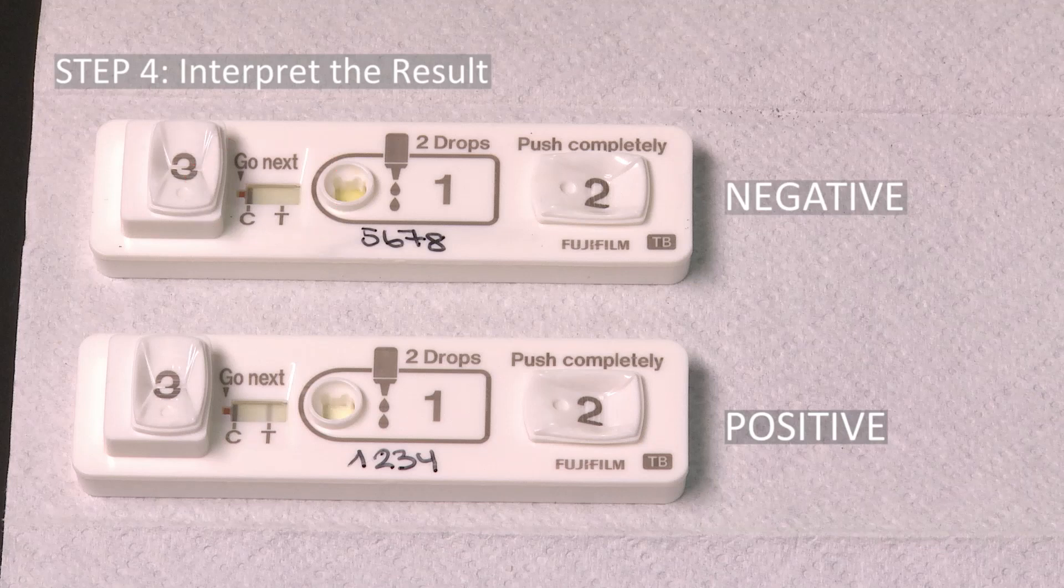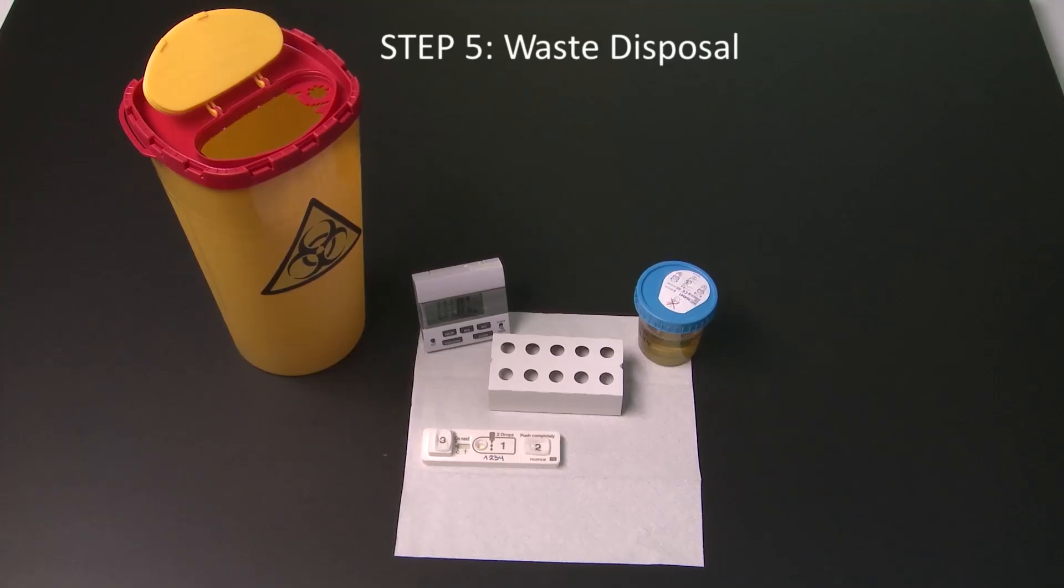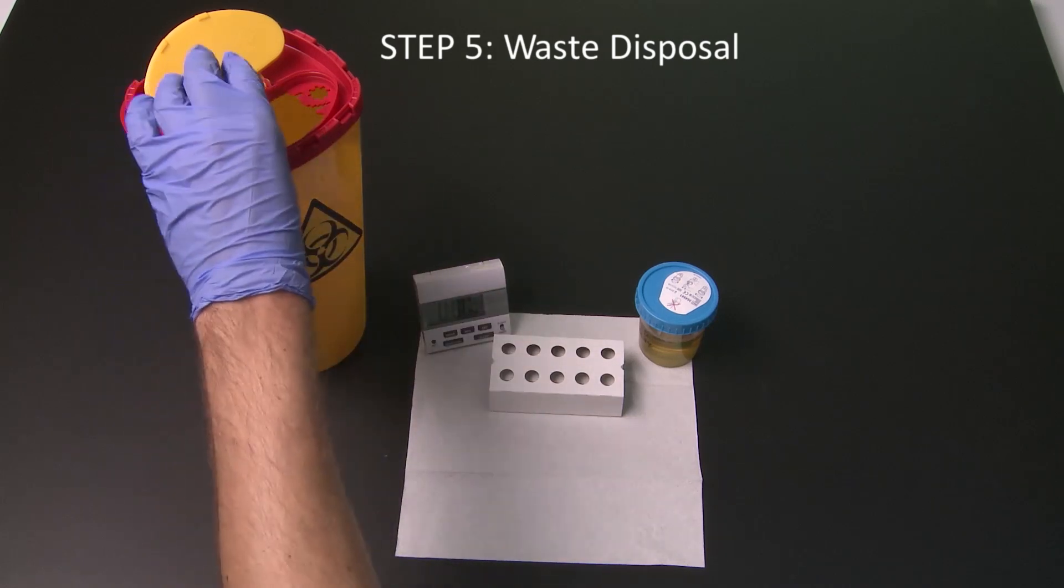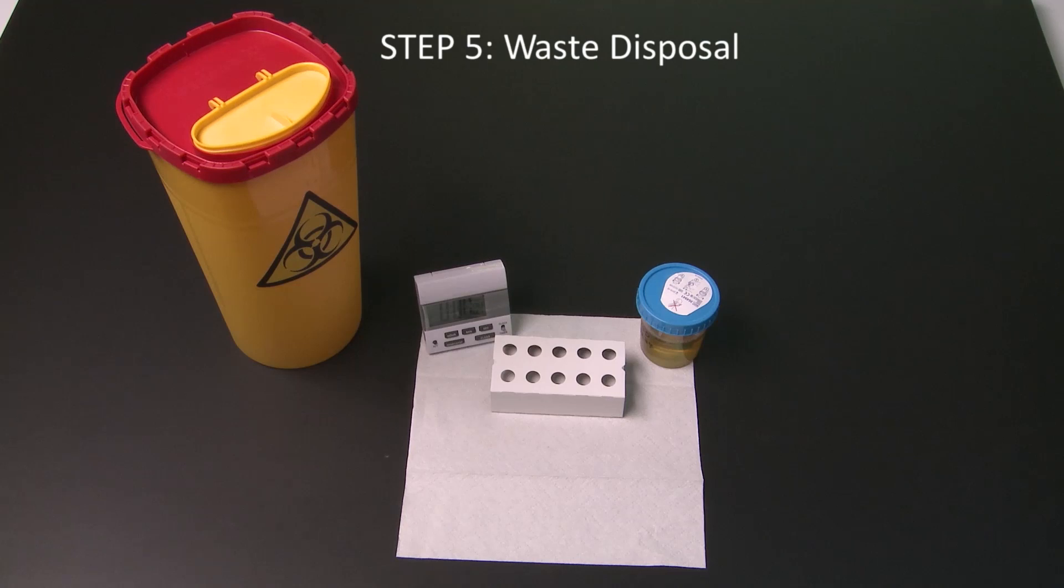If there is no control line, the result is invalid and the test must be repeated. Treat used devices and assay materials as potentially biohazardous waste and dispose of them according to local rules and regulations.